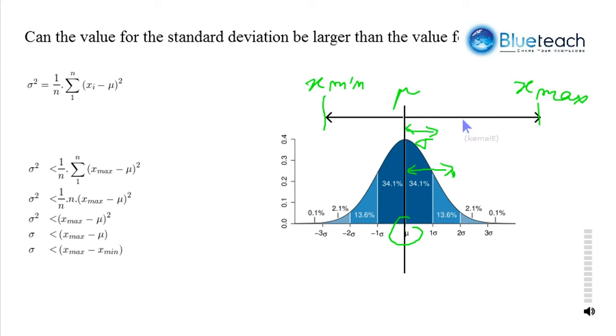In other words, this distance here is larger than this distance. So, there's a very wide x max value.